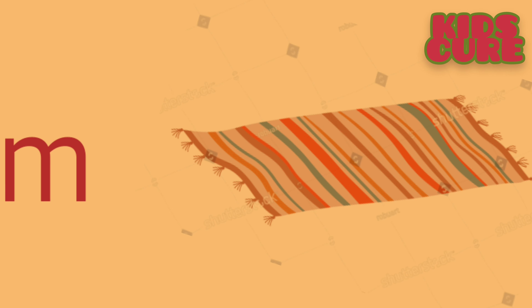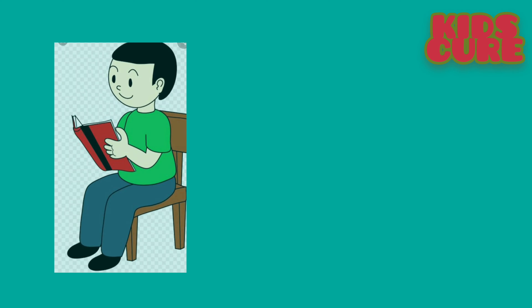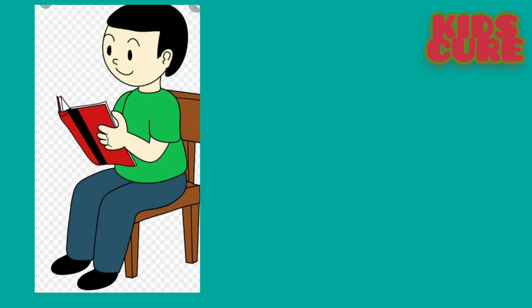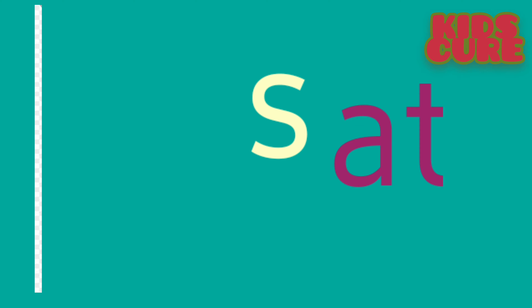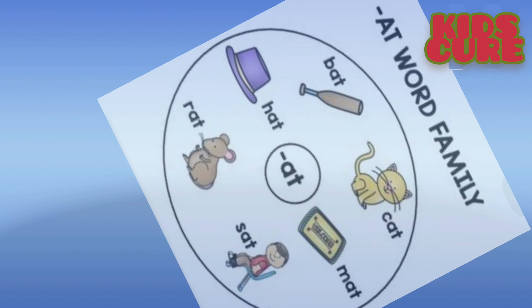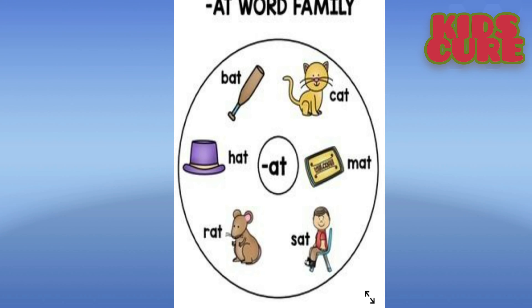Rat. R, A, T. Rat. Sad. S, A, T. Sad. Cat. These are the at family words.